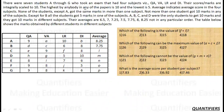The set says there were 7 students A through G who took an exam with 4 subjects: QA, VA, LR, and DI. Their scores were integrally scaled to 10, so everything is out of 10. The highest score by anybody in any paper is 10 and the lowest is 5, so we have a range of 5 to 10.